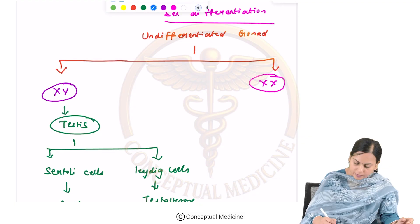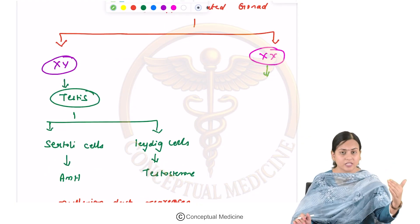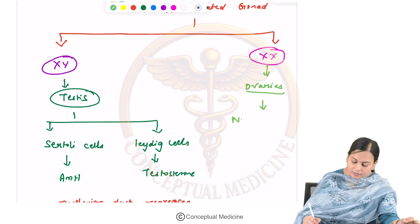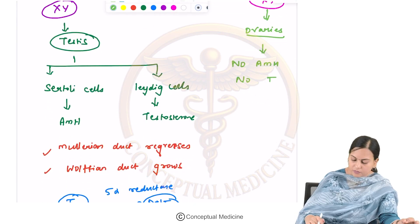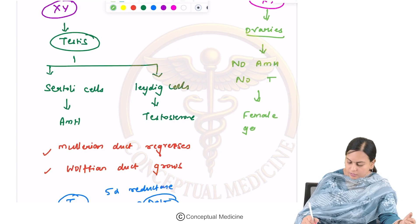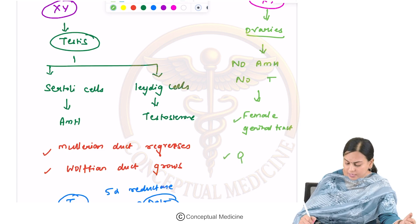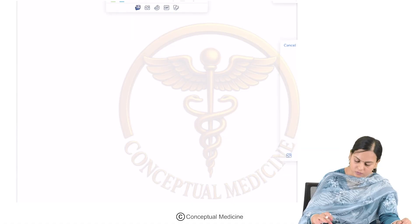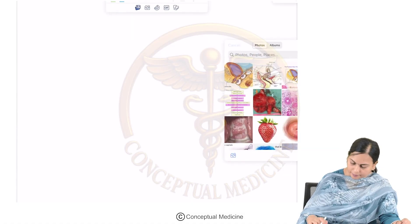In females, when the genetic sex is XX, the gonads are ovaries, and from the ovaries we don't get anti-Müllerian hormone or testosterone. This leads to the development of the female genital tract and female external genitalia. This is how normal sexual development happens.